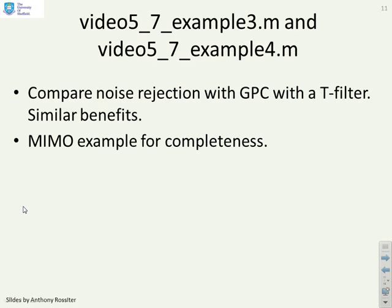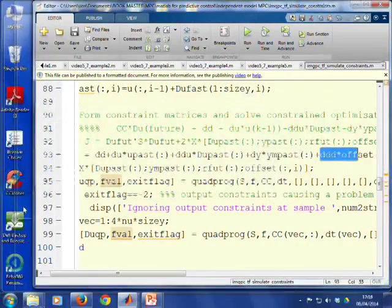What about these next two? Video 5-7 Example 3 and Video 5-7 Example 4. The first one compares noise rejection with GPC with a T-filter. You'll remember, if you put a T-filter into GPC, it tended to improve the noise rejection. And one of the reasons people use an independent model is that it has very good noise rejection properties. And we will show that. We'll just look at that example. And the second example, Example 4, is a MIMO example, as we've done before, just for completeness.